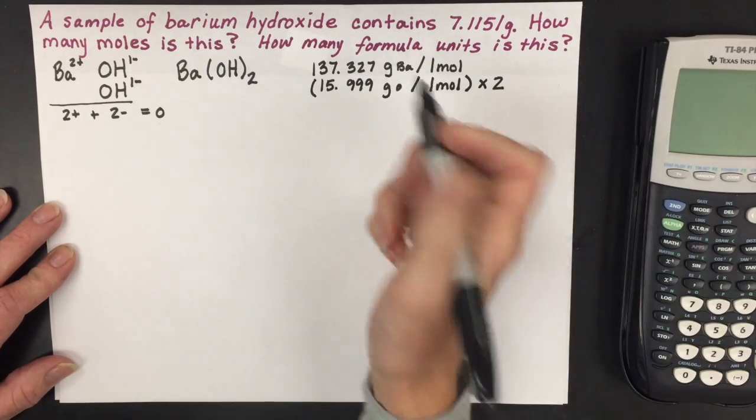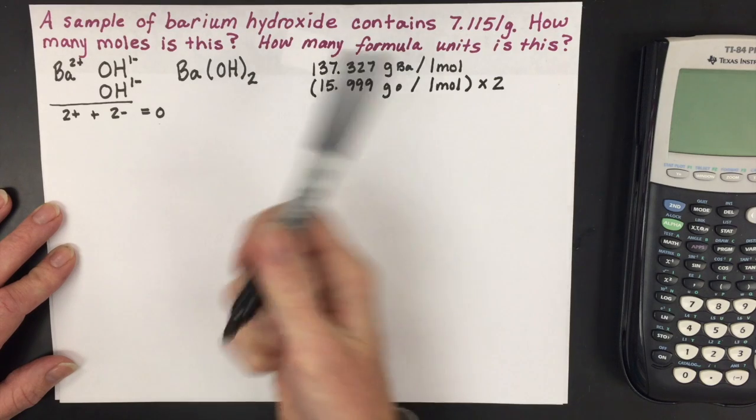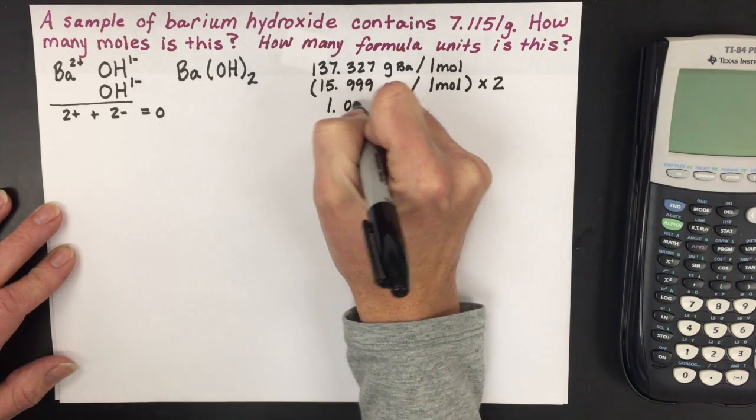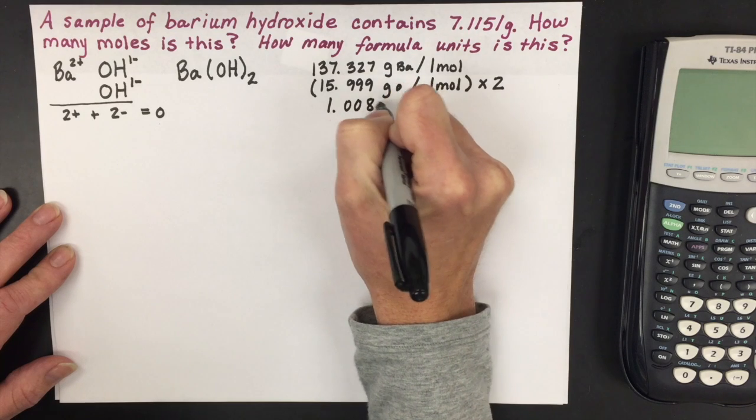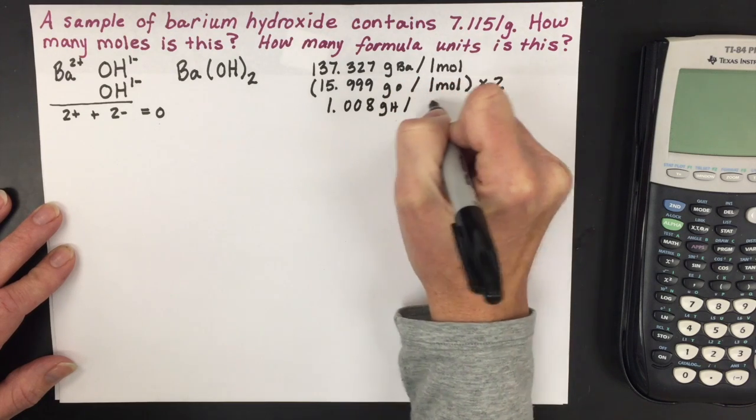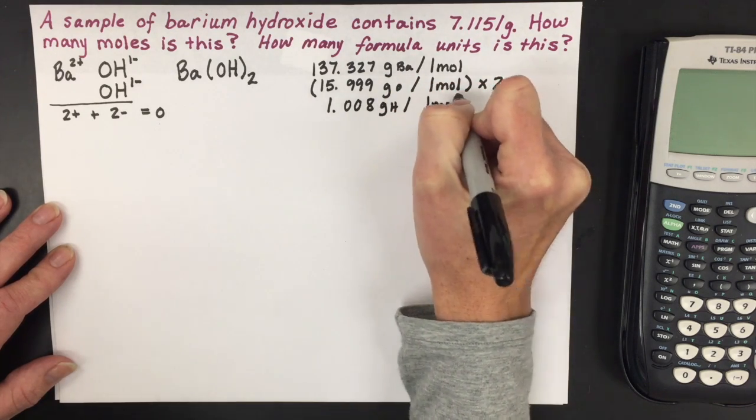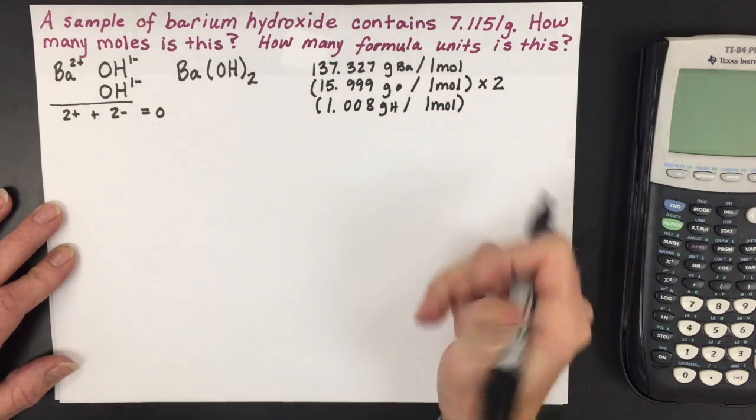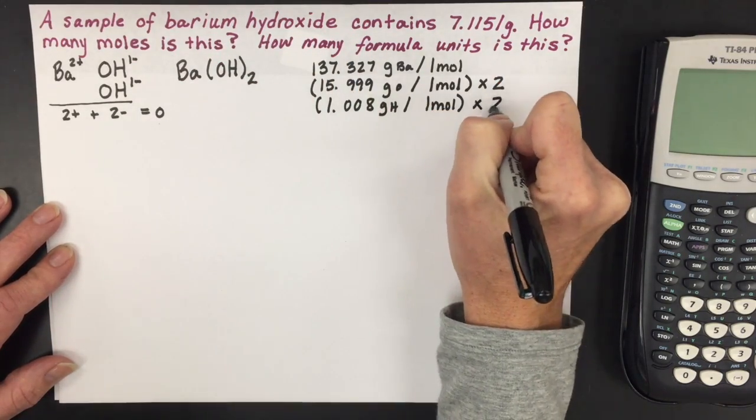I also need to look up the atomic mass of hydrogen, which is 1.008 grams of hydrogen for every one mole of hydrogen. And again, I also have two of those atoms in this formula, so I need to multiply that molar mass by two.